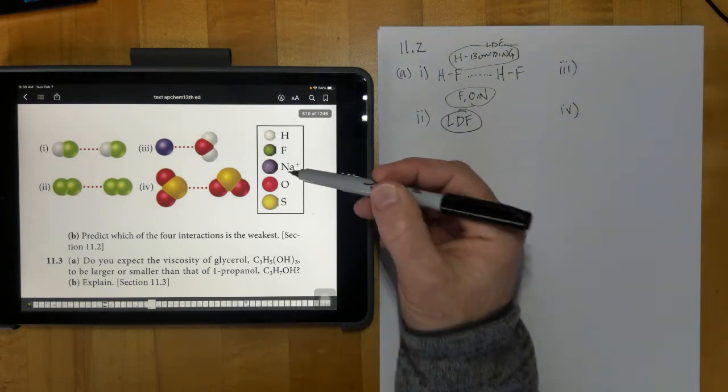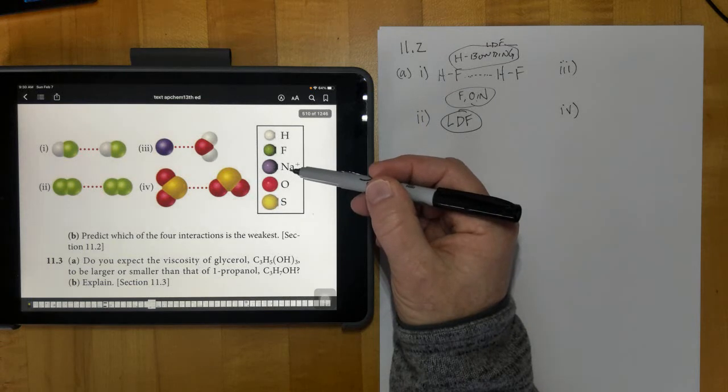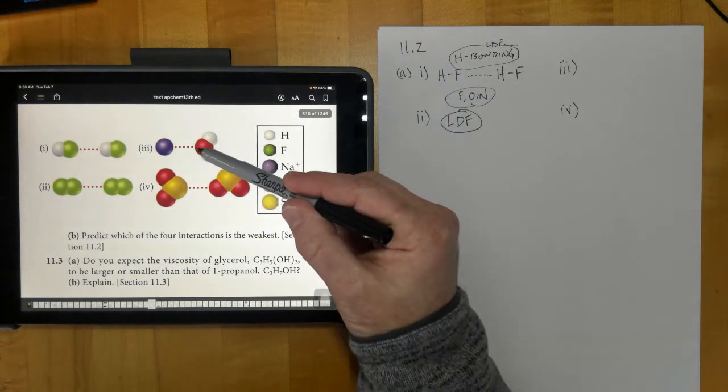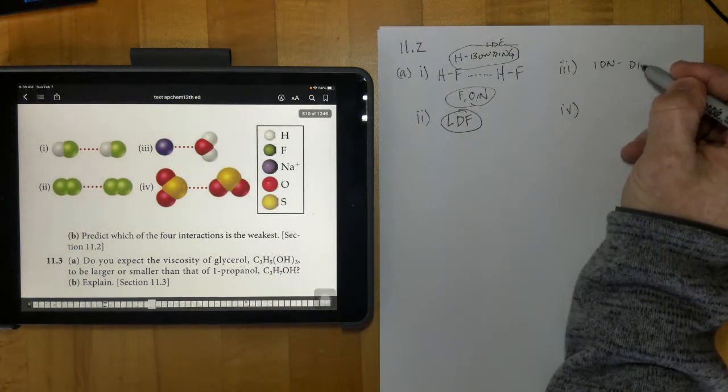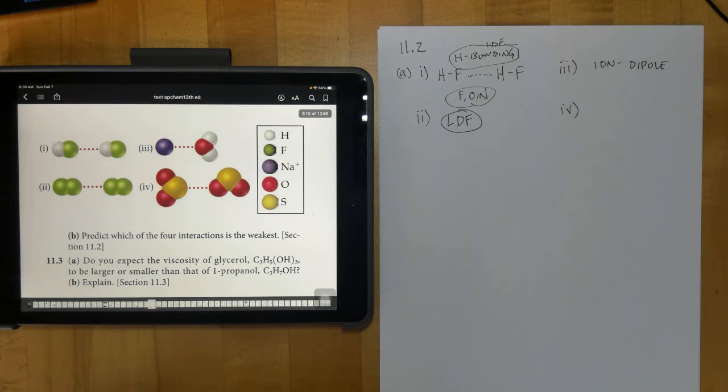And then number three, we have a sodium ion being attracted to the negative end of the oxygen on the water molecule. So this would be an ion dipole force right here, ion to a dipole.